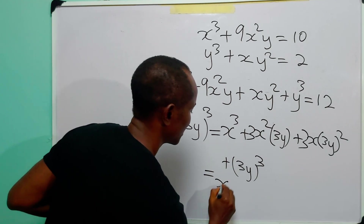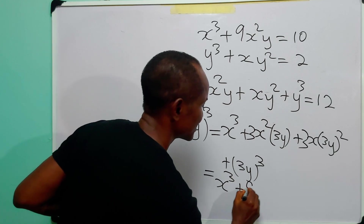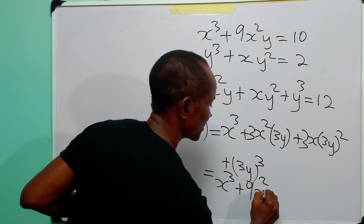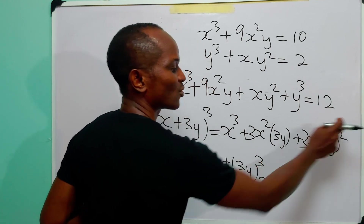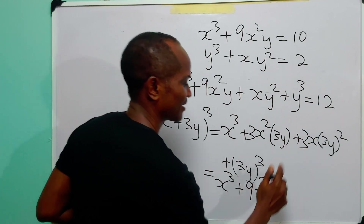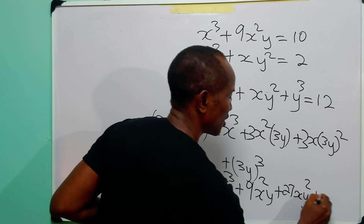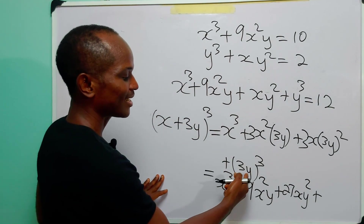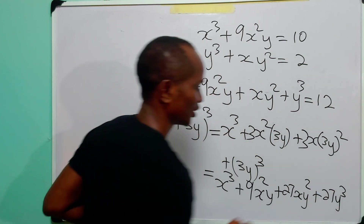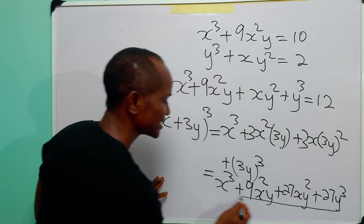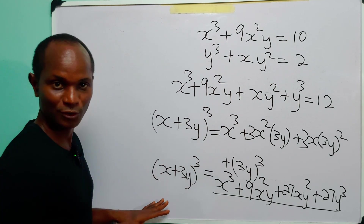Adding the coefficients, we get: x³ + 3·(3)x²y + 3·(9)xy² + 27y³, which simplifies to x³ + 9x²y + 27xy² + 27y³. This is the expansion of (x + 3y)³.